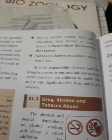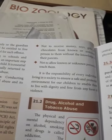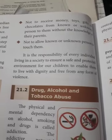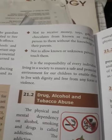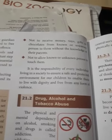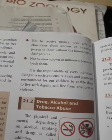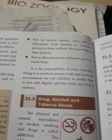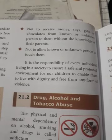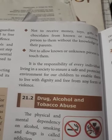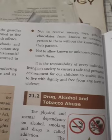Do not accept or receive money or toys without the knowledge of your parents, because they may attract you and you will be abused by that person. The fifth and last point: do not allow known or unknown persons to touch you. These are the different instructions to be given by parents and teachers to children to prevent abuse. It is the responsibility of every individual in society to ensure a safe and protected environment for children, to help them live with dignity and free from any form of violence.